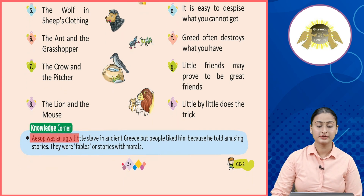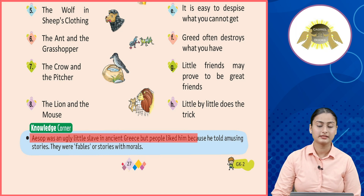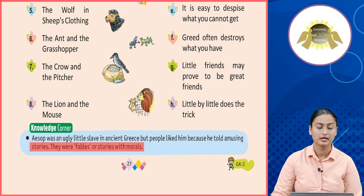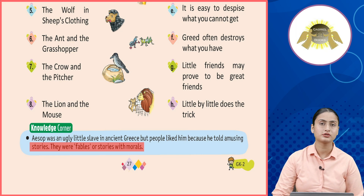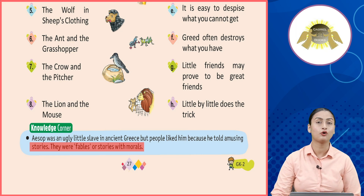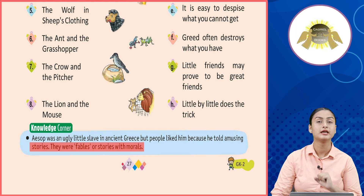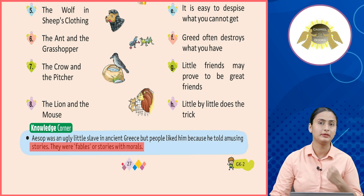Knowledge corner: Aesop was an ugly little slave in ancient Greece, but people liked him because he told amusing stories. They were fables, or stories with morals. Toh Aesop jo tha, woh ancient Greece mein rehta tha aur bahut ek alag insaan tha. Lekin wahan ke log usse bahut pasand karte the kyunki woh bahut achchi amusing stories sunaata tha. In stories ko fables naam diya gaya kyunki ye chhoti chhoti stories thin jinke end mein koi na koi moral milti thi.